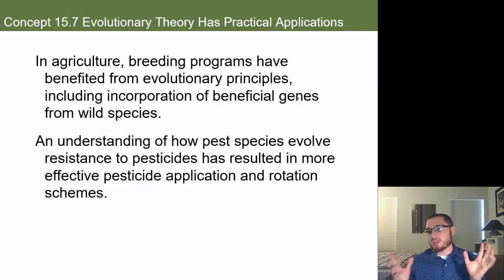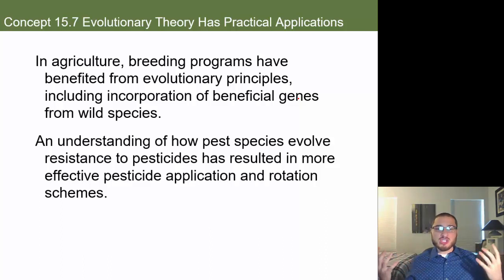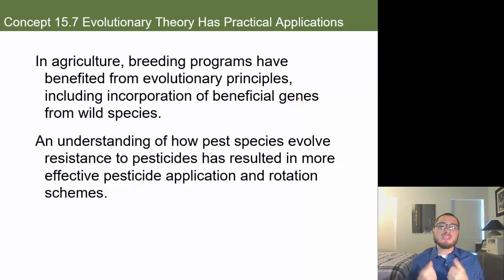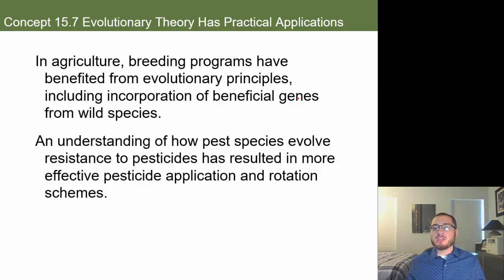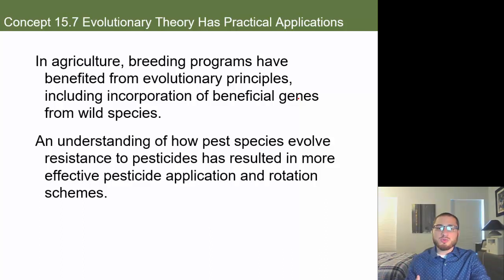That's where you hear about GMOs. They have a bad connotation, but they help feed our exploding population of over 7 billion people. We need crops that can survive various threats. An understanding of how pest species evolve resistance to pesticides has also resulted in more effective pesticide application and rotation schemes, combining evolutionary knowledge with agricultural practice for the best balance.